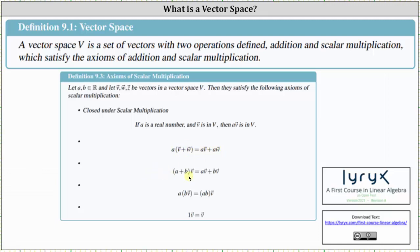Next, the sum of A and B times vector V is equal to A times vector V plus B times vector V. Next, A times the product of B and vector V equals the product of A and B times vector V. And finally, one times vector V equals vector V.